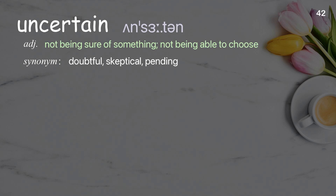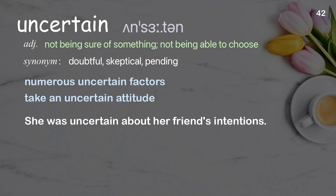Uncertain: Not being sure of something; not being able to choose. Examples: Numerous uncertain factors, take an uncertain attitude. She was uncertain about her friend's intentions.